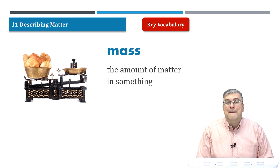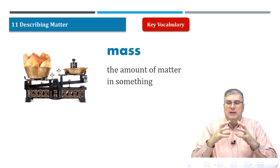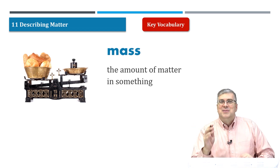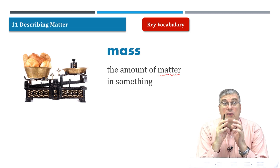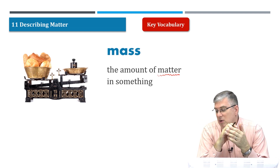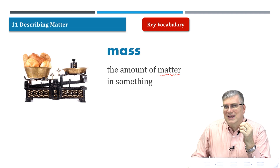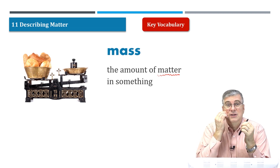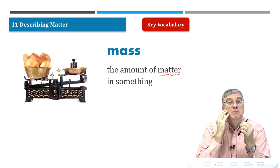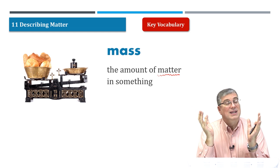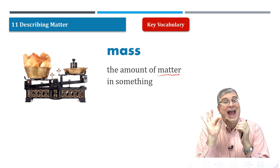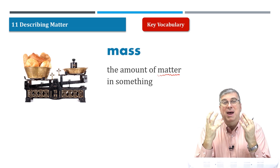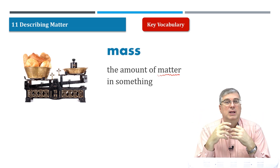First, we have the word 'mass.' Mass is the amount of matter in something. I made a little joke at the beginning of this lesson — I said 'what's the matter' — but that's a different meaning. Matter is everything around you: the table made of wood or plastic, your skin, your bones, your flesh — that is matter. Even air is matter, because it has atoms.